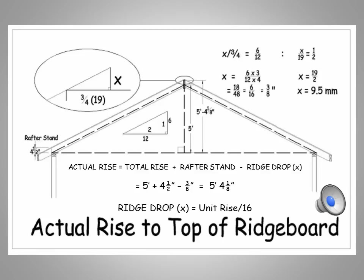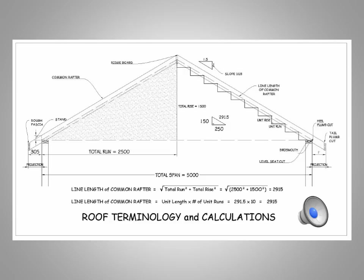So when we go to set our ridge board, the actual rise to the top of the ridge board is total rise plus rafter stand minus ridge drop. In this example: 5 feet plus 4½ inches minus ⅜ inch gives 5 foot 4 and ⅛ inches. In the imperial system, the amount by which you drop the ridge is always equal to the unit rise from the slope over 16. For a 7-12 roof, the ridge drop is 7 over 16. For a 6-12 roof it was 6 over 16, which is ⅜. For a 12-12 roof — which is 45 degrees — the ridge drop is 12 over 16, which is ¾ of an inch.